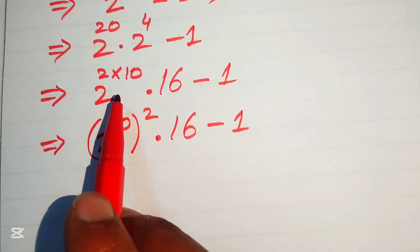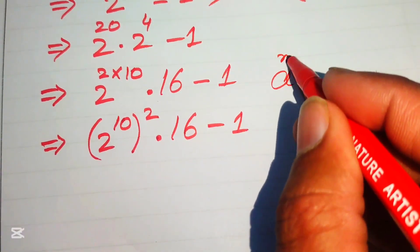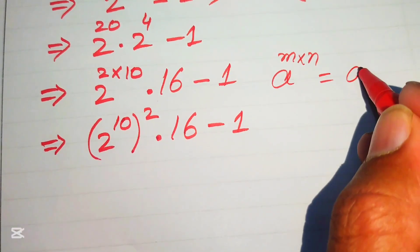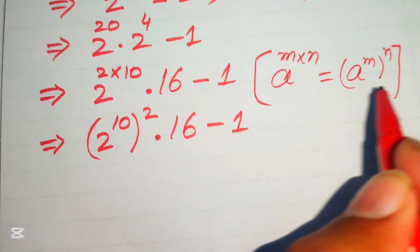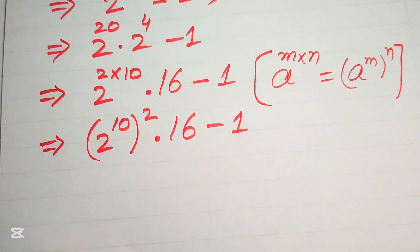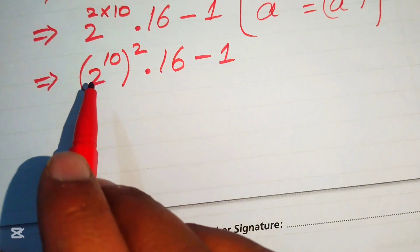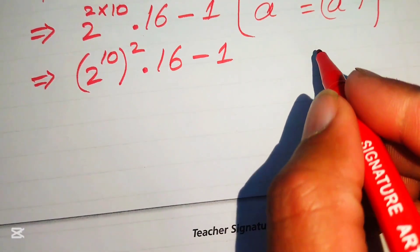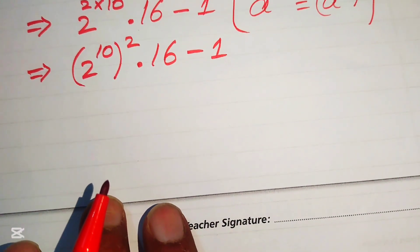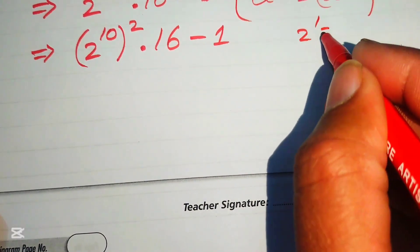We apply the exponent law: a^(m×n) = (aᵐ)ⁿ. So 2 to the power of (2 × 10) is written as (2¹⁰) squared. Now we need to find the value of 2 to the power of 10. We can apply a nice trick for this.